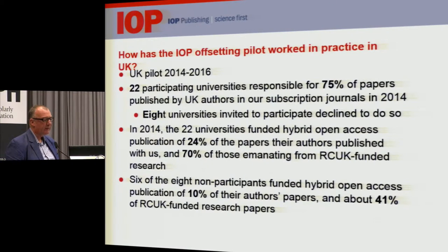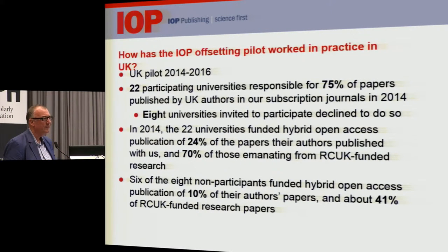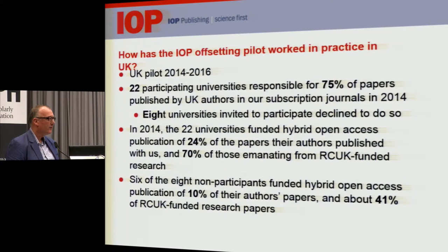We have two pilots running at the moment and we're in the second year. I'll focus on the UK because it's much more complicated than the Austrian agreement. In Austria there are three players: IOP, the funding agency FWF which pays all the APCs, and a single library consortium against whose license fees we offset the APCs. The UK is much more complicated — there is no national library consortium, and RCUK decided to allocate funds to pay APCs to around 30 universities rather than handle them directly. We invited those 30 UK universities that support research in physics to participate; 22 agreed, and those 22 last year represented about 75% of all papers published by UK authors in our subscription journals.